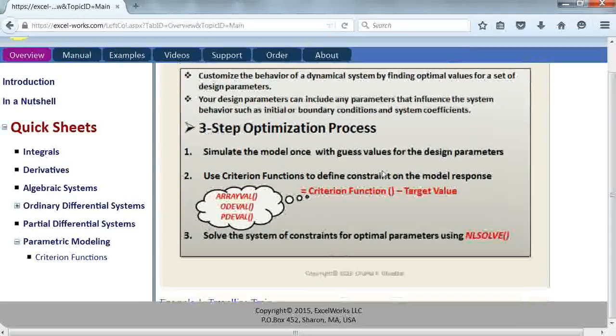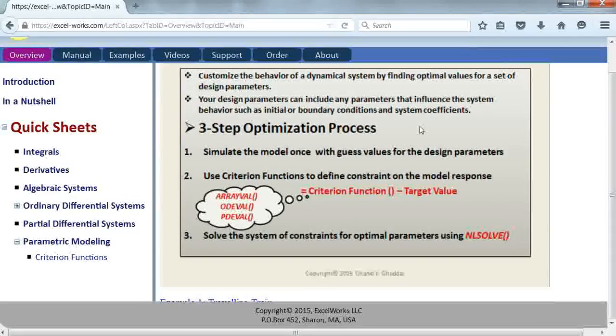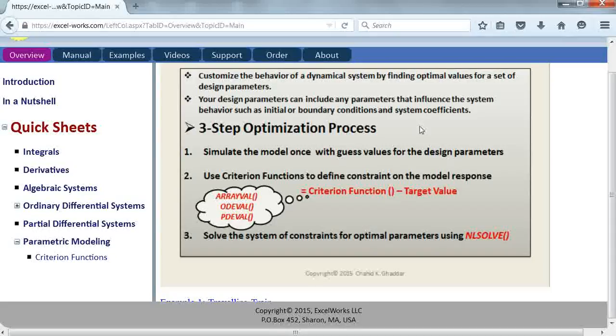The process is straightforward and fairly simple and has three steps. First, we simulate the model once using some guess values for the design parameters. Next, we define constraints on the system response using criterion functions. Finally, we drive these constraints to zero to find the optimal values for the parameters using the nonlinear solver NLSolve.